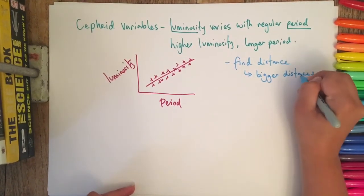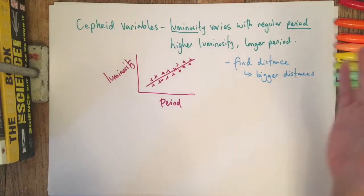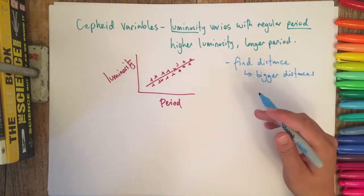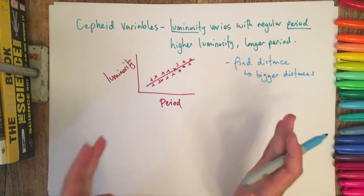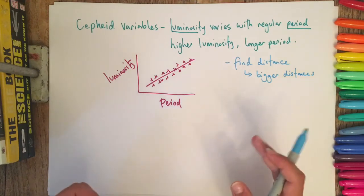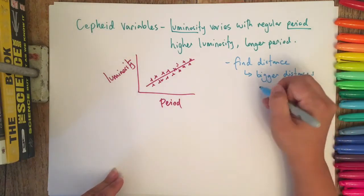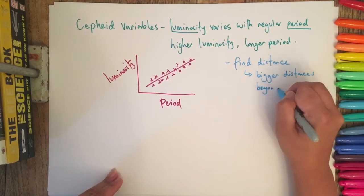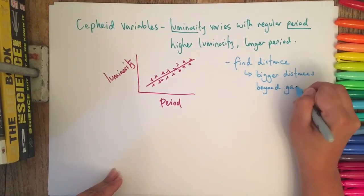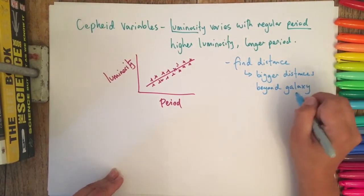Parallax can only be used on relatively close things. Anything that's further away, the parallax angle becomes so small that it can't be measured. Therefore we can look at and estimate distances that are beyond our own galaxy, the Milky Way.